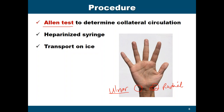The procedure involves having the patient clench his fist, and then the examiner occludes both the radial and ulnar arteries. The patient opens his hand and the color will be blanched or pale and cool. The examiner then releases the ulnar artery and should expect the color of the hand to return to pink within several seconds. If that doesn't happen, it means there is an obstruction in the ulnar artery, and it will not be safe to puncture the radial artery. Remember: the Allen's test checks the patency of the ulnar artery, and the puncture is done on the radial artery.